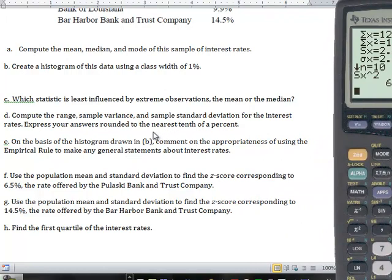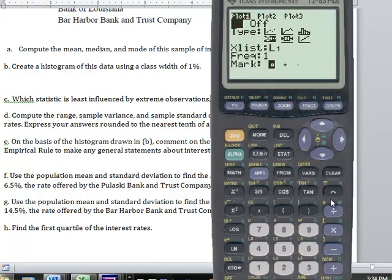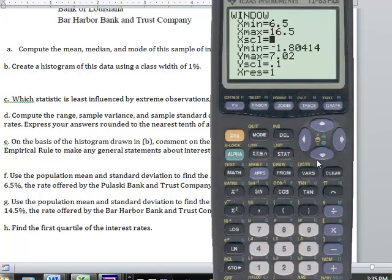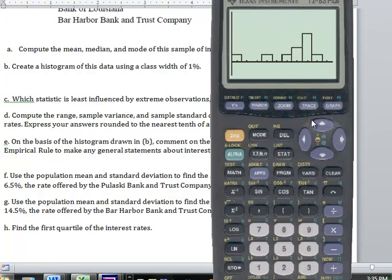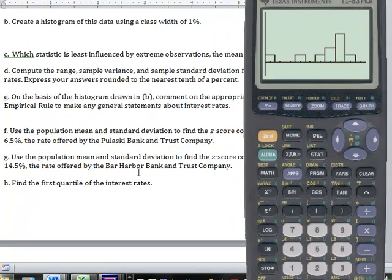Based on the histogram drawn in B, comment on the appropriateness of using the empirical rule. Remember, the empirical rule is only good for what kind of distributions? When they're symmetric and bell-shaped. Not only symmetric, but they need to be bell-shaped. When I go back and look at this histogram, this is skewed left, so the empirical rule would not be as appropriate here. You could certainly use it, but you'd be off a little bit.